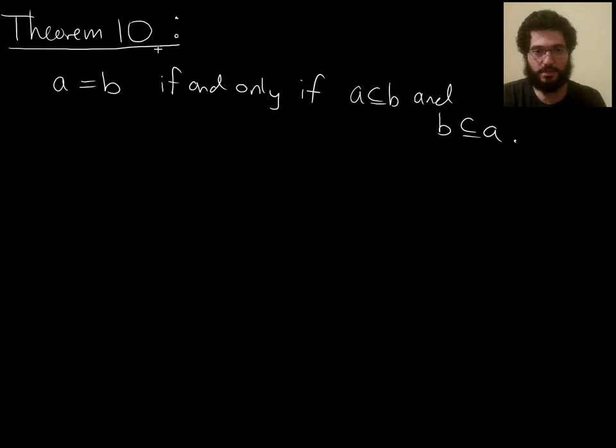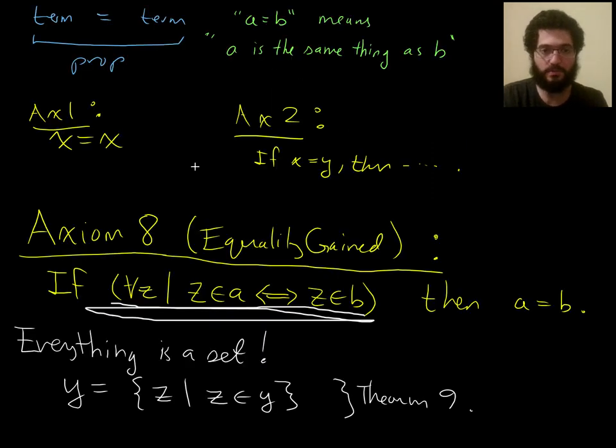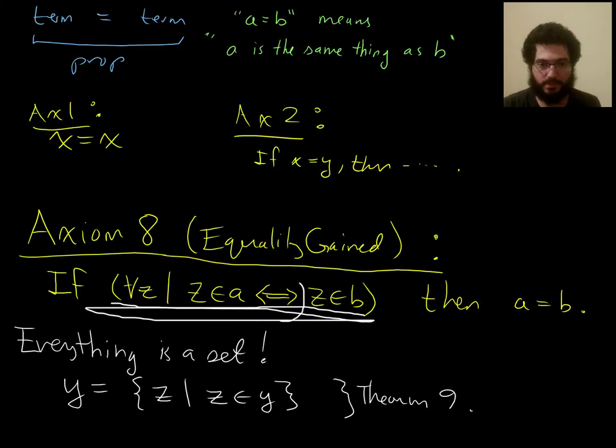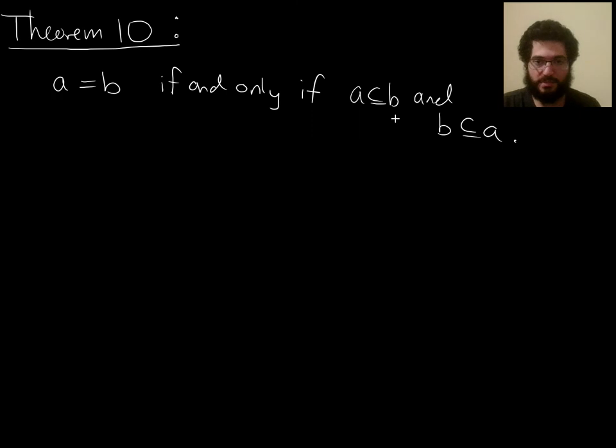So we often use this actually much more than we would use axiom 8. We would use theorem 10 much more often than we use axiom 8. And the reason for that is that using axiom 8 requires you to prove a double arrow statement here. Whereas using theorem 10 sort of naturally splits things up and says, prove this which contains a single arrow going one way, and then prove this which contains a single arrow going the other way.